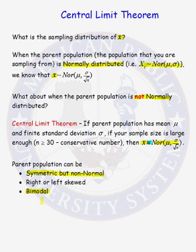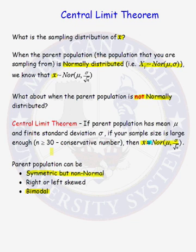In the case where the parent population is bimodal, that is where you need a much greater sample size to ensure that the sample mean will be approximately normally distributed. Many of the inference procedures used in the practice of statistics rely on an assumption that your sample mean is normally distributed. If we do not know the distribution of our parent population, we could be stuck. But with the Central Limit Theorem, as long as the sample size is sufficient — 30 or greater — we can say that x-bar is approximately normally distributed and the inference procedures can be used. So the Central Limit Theorem is a crucial and critical theorem in the practice of statistics.